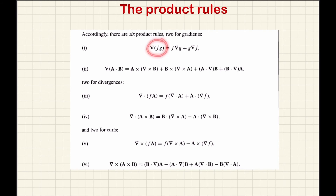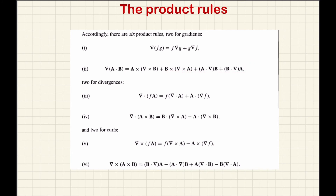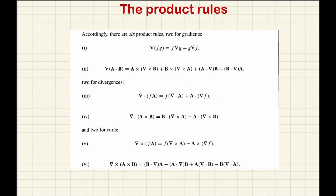The gradient of the product of two scalar functions follows the ordinary derivative distribution: first function times gradient of second plus second function times gradient of first. The gradient of a dot b is a longer expression. The third product rule is del dot (f a), where f is a scalar function and a is a vector function. The fourth product rule is del dot (a cross b) equals b dot (del cross a) minus a dot (del cross b).